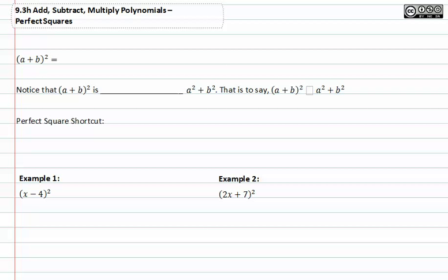In this video we're going to learn about perfect squares. Notice that if you have some number of terms inside parentheses raised to an exponent, it's the same as whatever's in exponents multiplied to itself that number of times. So a plus b raised to the second is the same as a plus b times a plus b.